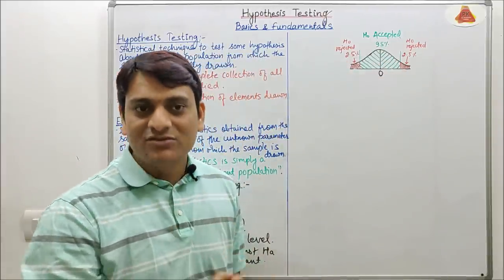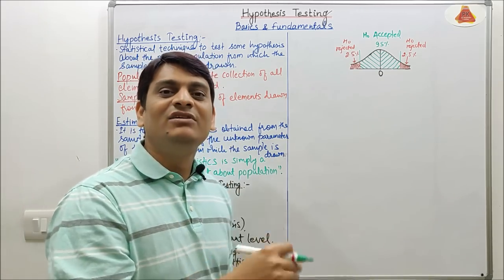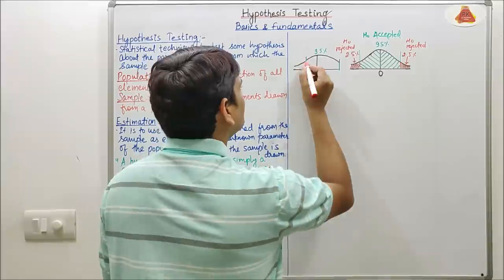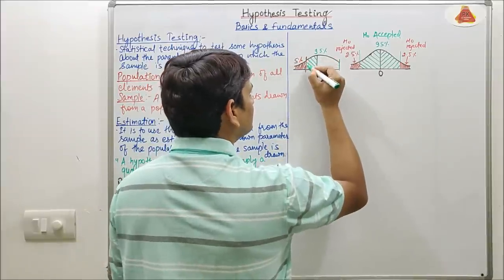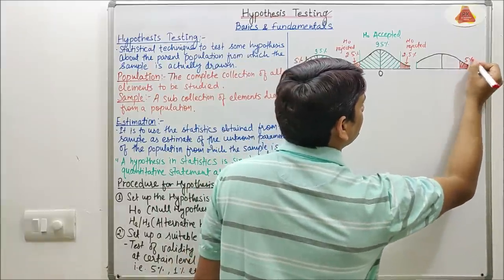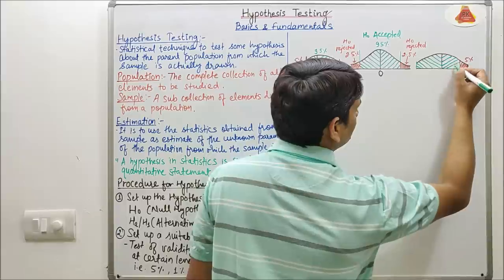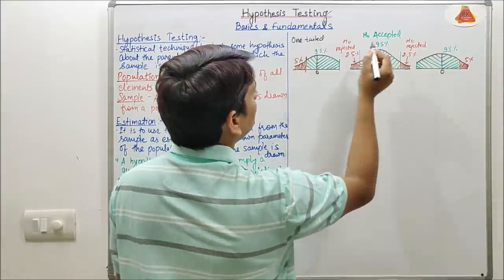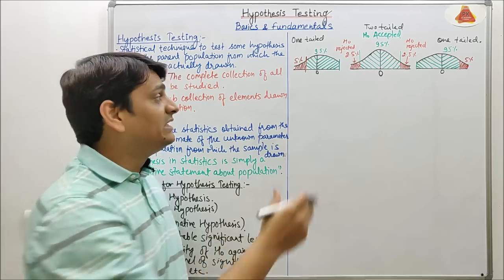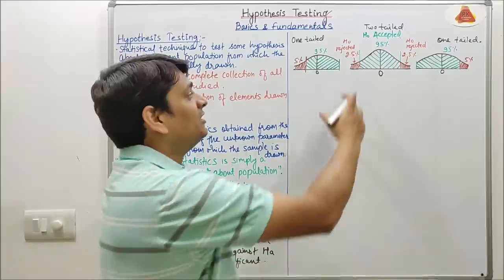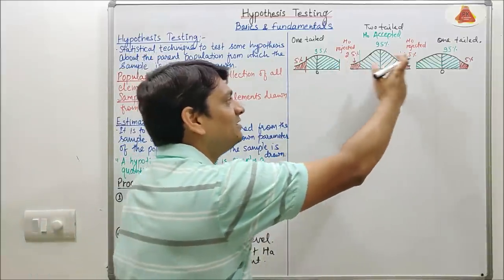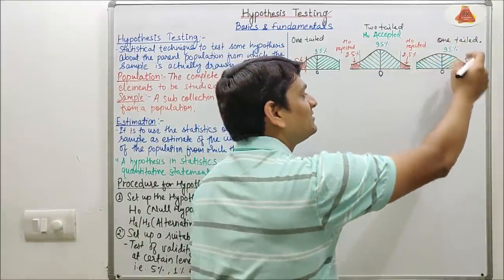There is also a one-tailed test, which is of two types: left-sided and right-sided. For a left-sided one-tailed test, error will occur only on the left side. For a two-tailed test, error may occur on both sides — 50% chances on the left and 50% chances on the right — that is why 5% is divided into two parts: 2.5% on each side. For a right-sided one-tailed test, error will occur only on the right side.